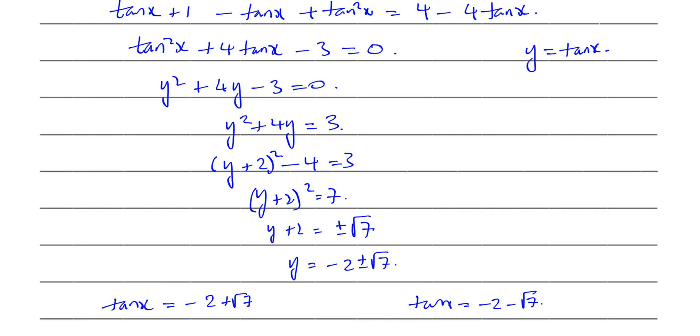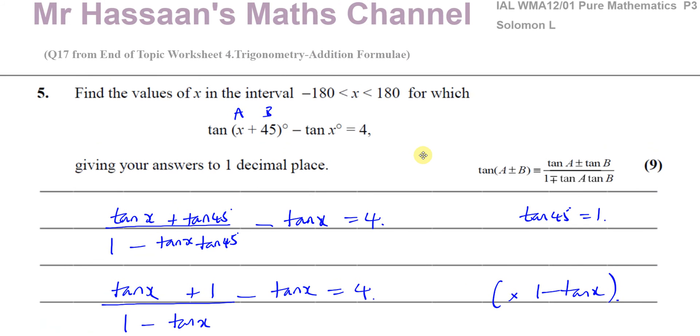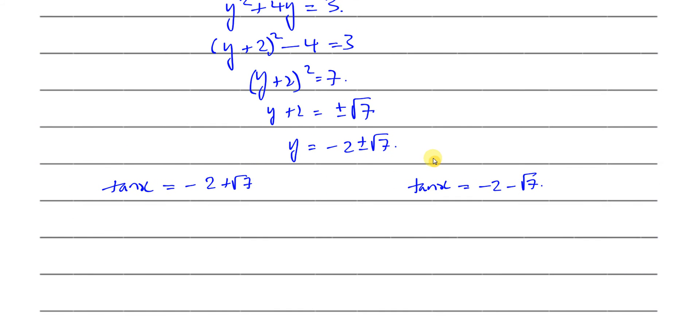So now I have almost got there. I have to just solve these equations and find the values within our range. If we go back up and see the range, the range is between minus 180 and 180. So I've got to find the values of X for which tan of X equals minus 2 plus root 7. So I'm going to use inverse tan of minus 2 plus root 7. Let's find my calculator.